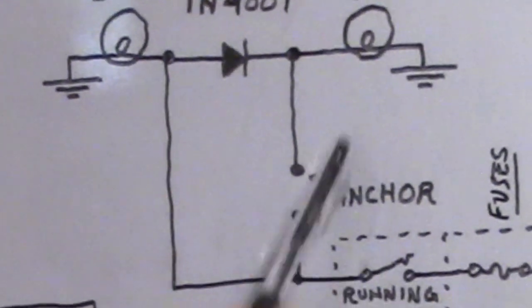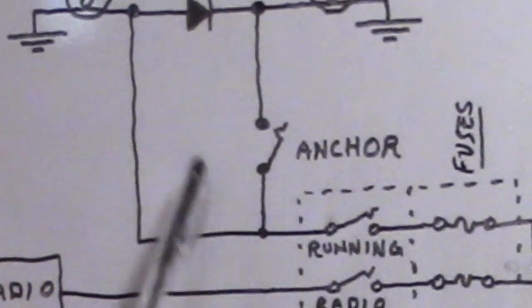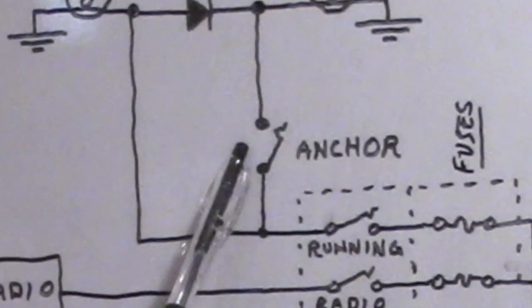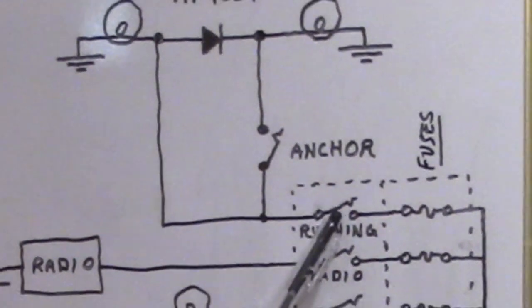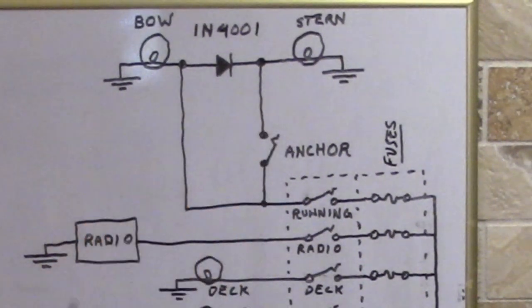To turn the stern light on there is a switch right here just for the anchor, and this switch here turns on both of them and that is the running light. And this area right here is what I'm going to show you, how I wired this and how this circuit works.